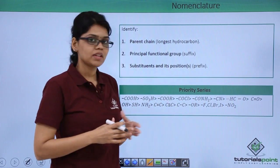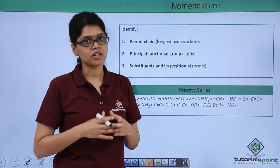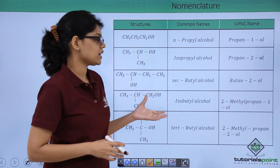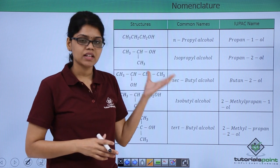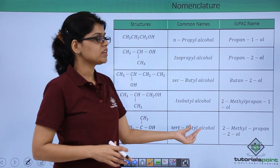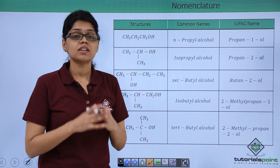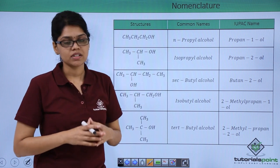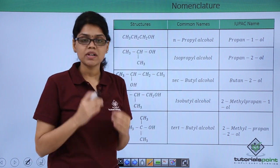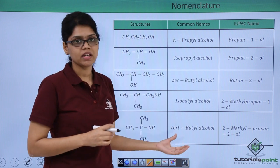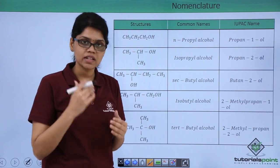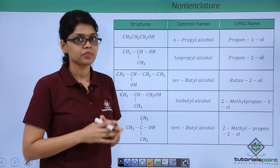We are already familiar with the priority series of various functional groups. Here we have a table with various structures, their common names and IUPAC names. It is very important that along with the IUPAC name we must remember at least these common names of the structures given here, because they are used very commonly in organic chemistry.